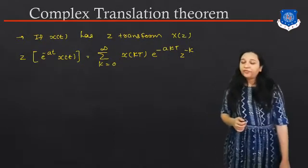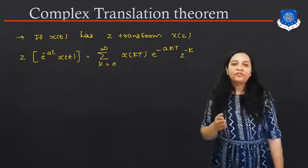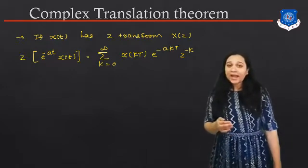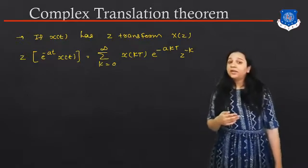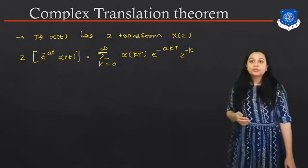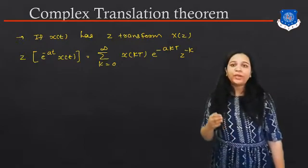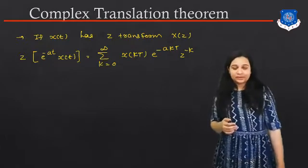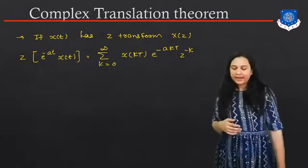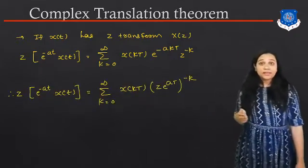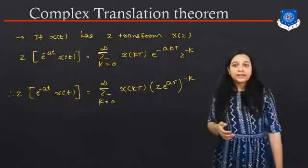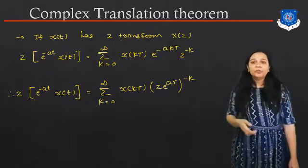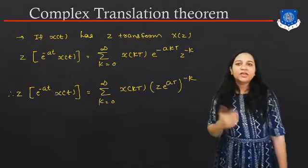If X(K) has the Z-Transform X(Z), then Z{e raised to AT · X(T)} equals the summation from K = 0 to infinite of X(KT) · e raised to minus AKT · Z raised to minus K, as studied in digital signal processing. The simplified version is: Z{e raised to minus AT · X(T)} equals the summation from K = 0 to infinite of X(KT) · (Z · e raised to AT) raised to minus K.